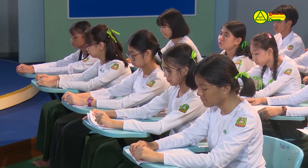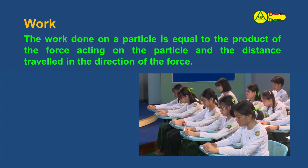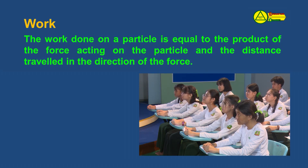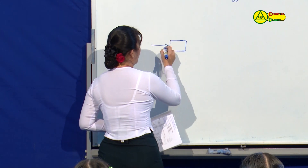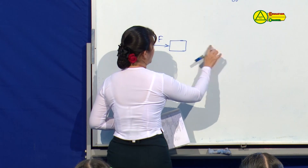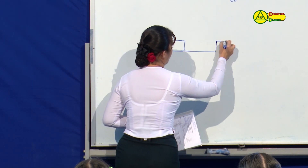The work on the particle is equal to the product of the force adding on the particle and the distance traveled in the direction of the force. The work on the particle is equal to the product of the force. If you can see, the work on the particle is equal to the value of the force.